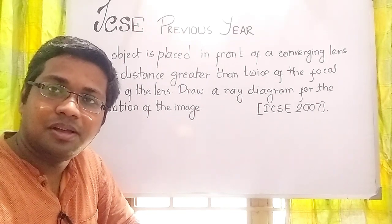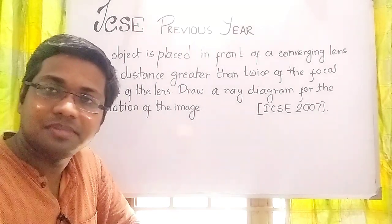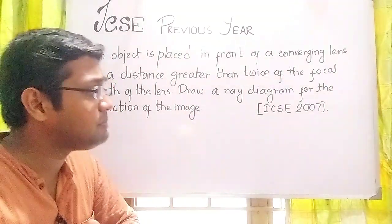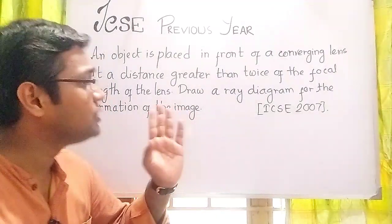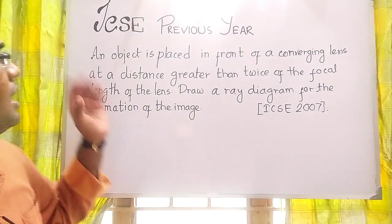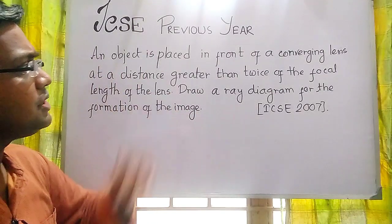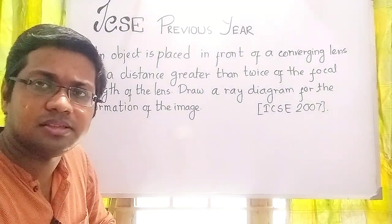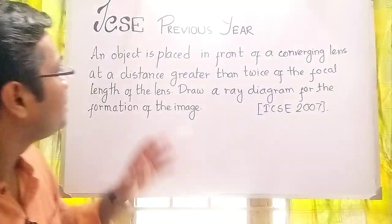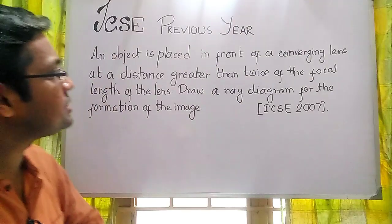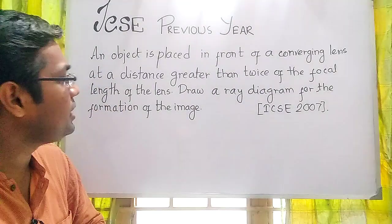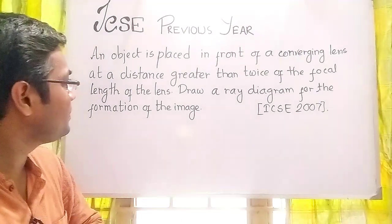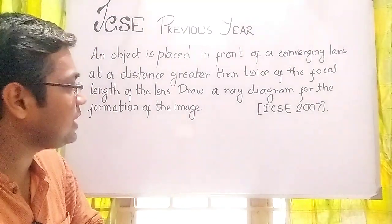Welcome all of you. This is the second lecture where I unplug questions from ICC 2007 and go for the question directly. An object is placed in front of a converging lens — converging lens means convex lens — at a distance greater than twice the focal length of the lens. Draw a ray diagram for the formation of the image.